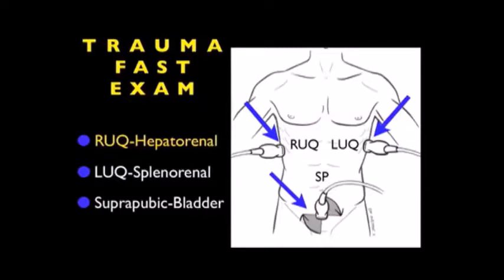Traditionally, it's been emphasized that the hepatorenal area or Morrison's pouch view is the primary target for the right upper quadrant, but it can take up to 600cc's of fluid to make a positive exam if only looking into that area. So I'll show some alternative views in this module that can help us to possibly improve on that number.